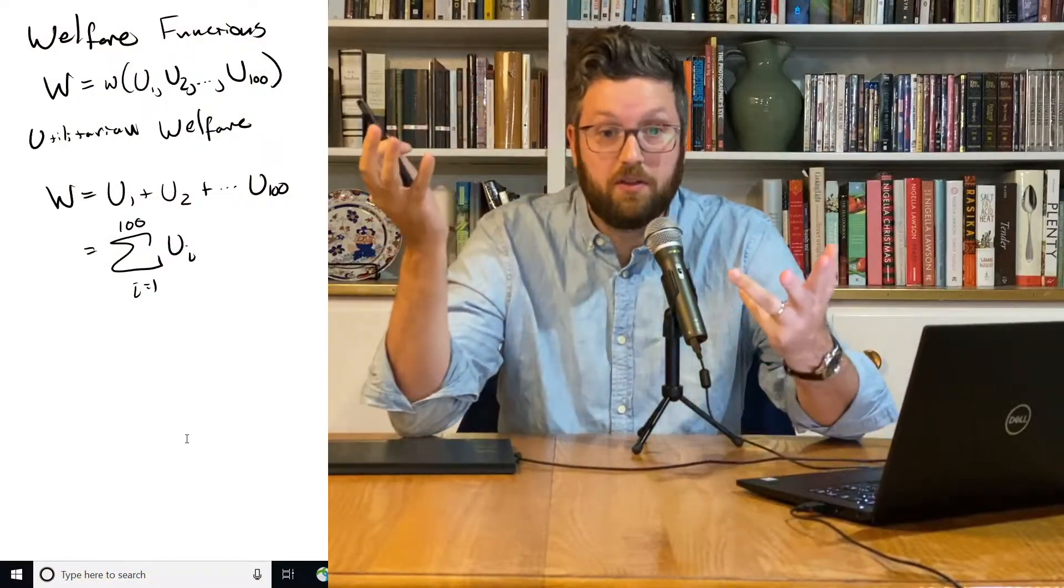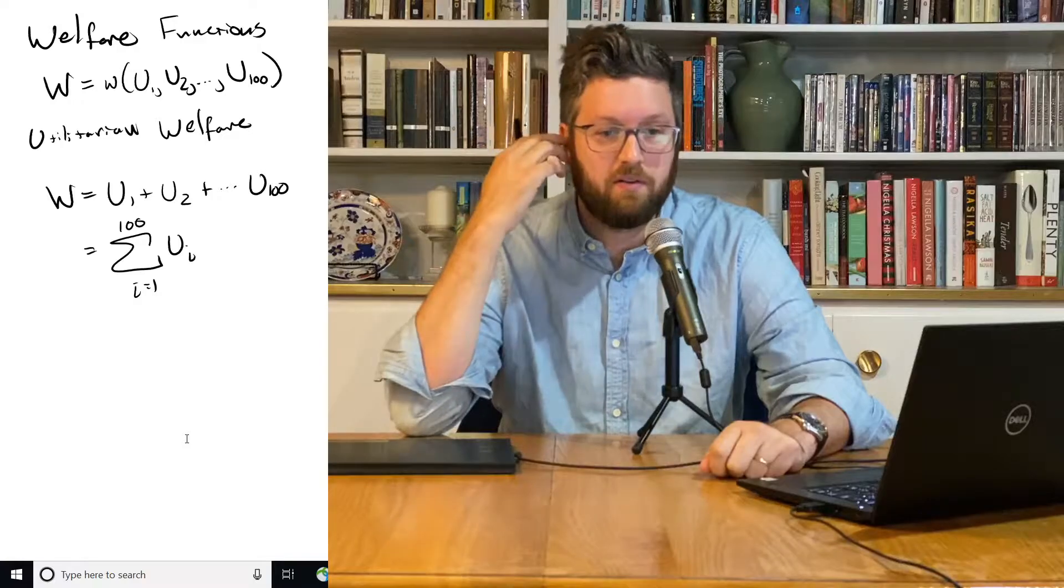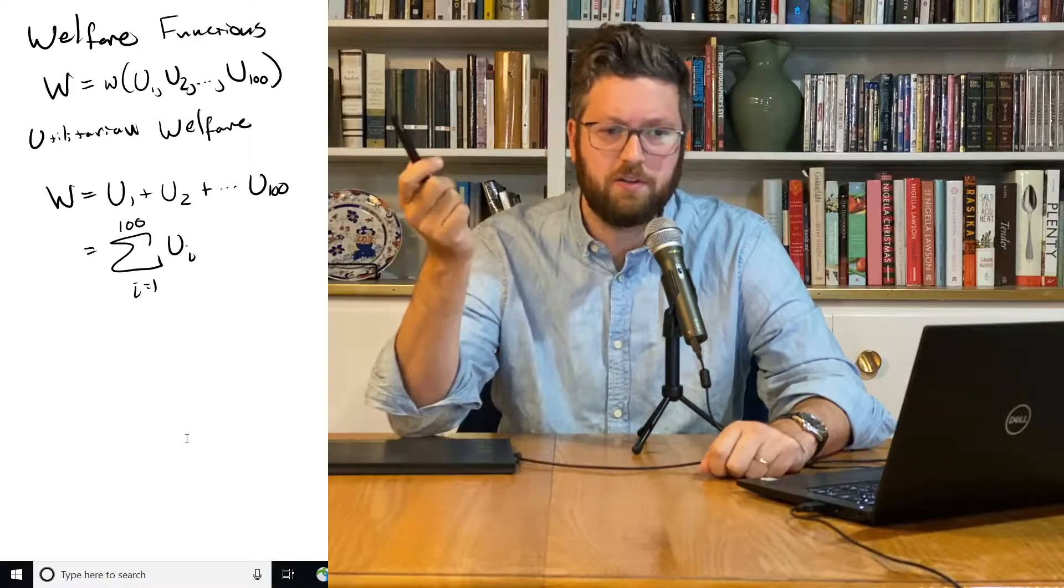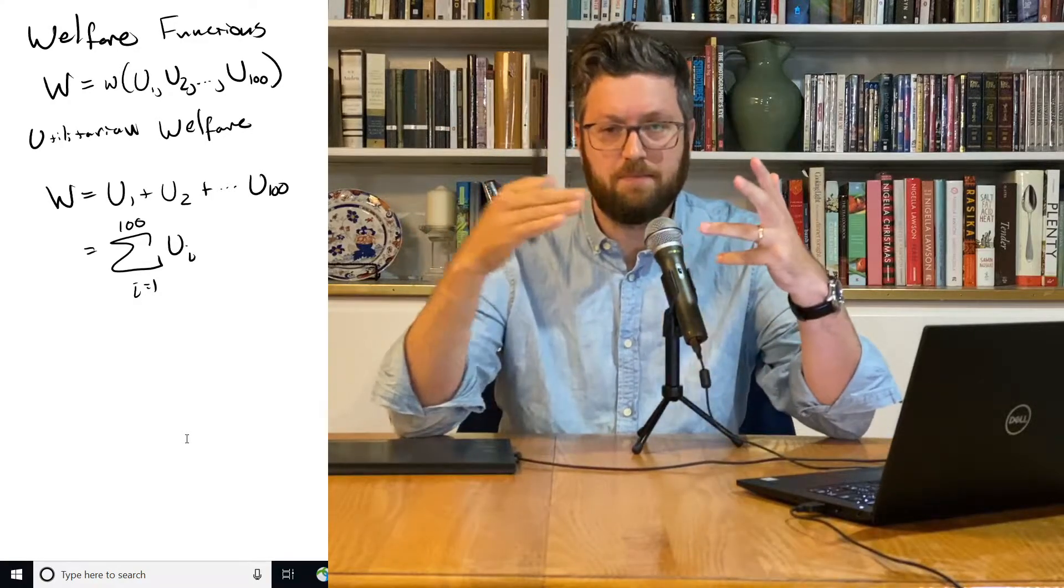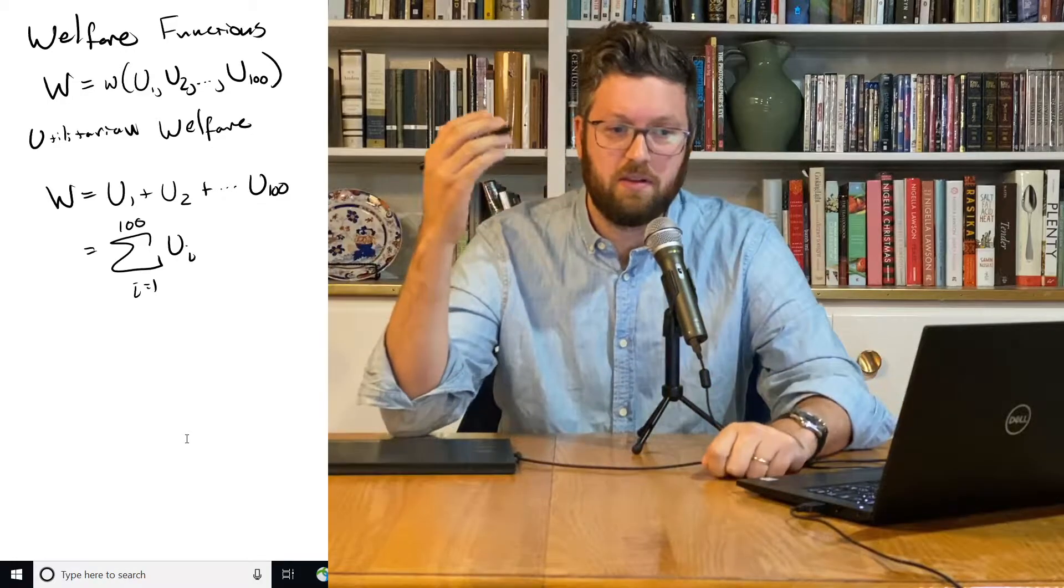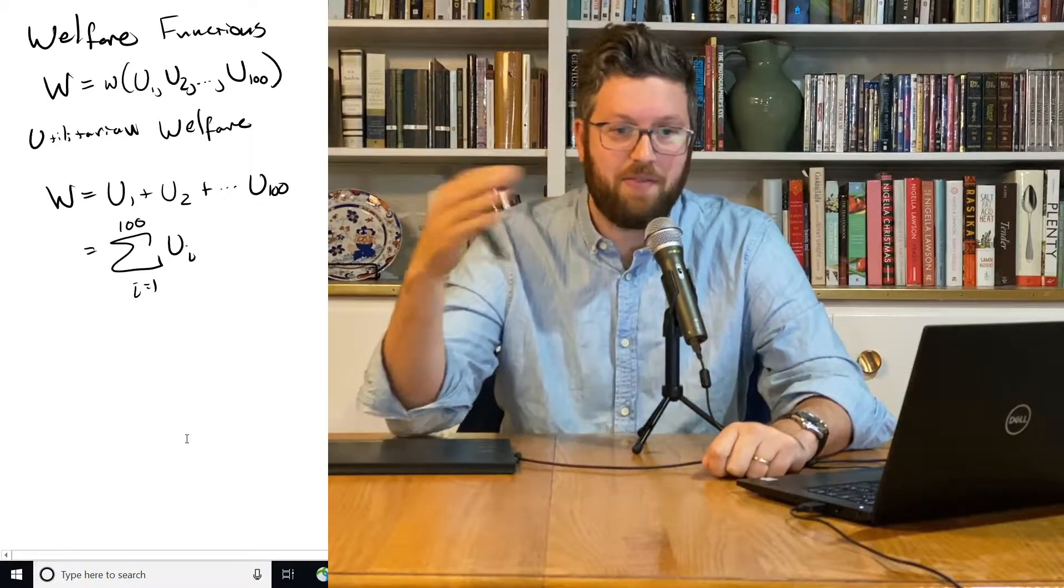So this is called the utilitarian approach to welfare. We've got a welfare function that takes as its inputs the utility of everybody, and in this function, we just add those all up.